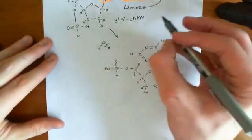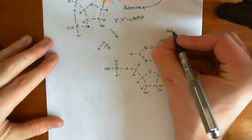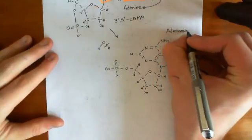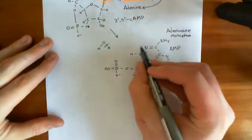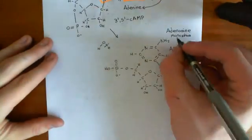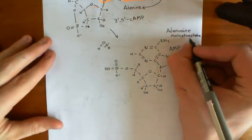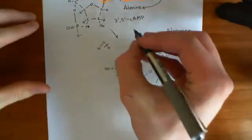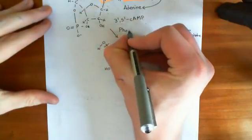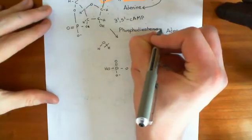Cyclic AMP stands for cyclic adenosine monophosphate. We've destroyed the cycle and now have adenosine monophosphate. Adenosine refers to the adenine organic base bonded to ribose, and monophosphate indicates a single phosphate group added to the adenosine. That's the reaction that our phosphodiesterases catalyze — the phosphodiesterase reaction, often abbreviated as the PDE reaction.